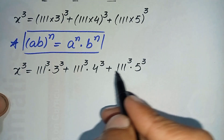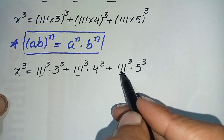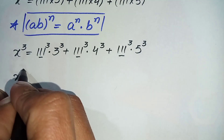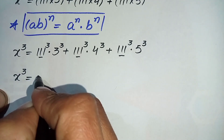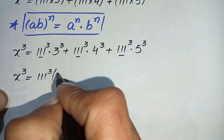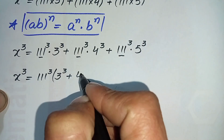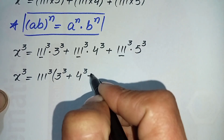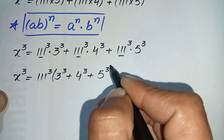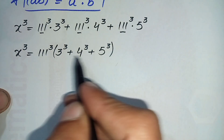Now look at all the terms on the right-hand side — all terms have 111 raised to power 3 in common. So in the next step we will factor out 111³. The equation becomes x³ = 111³ × (3³ + 4³ + 5³).